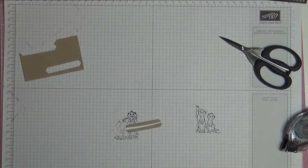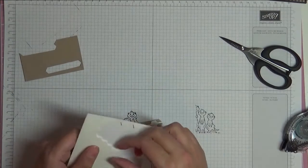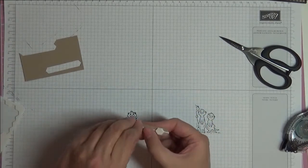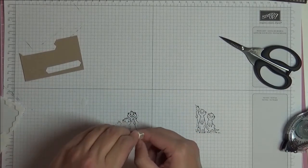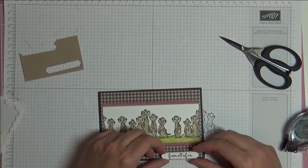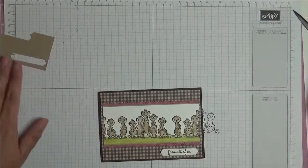Now we're just going to stick that to the card with dimensionals. Take the backs off those, bring back our card, and there we go. That's what we just made.